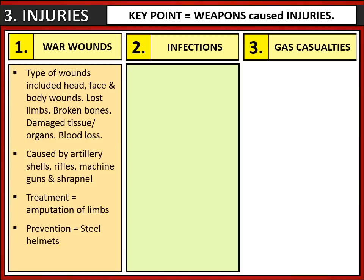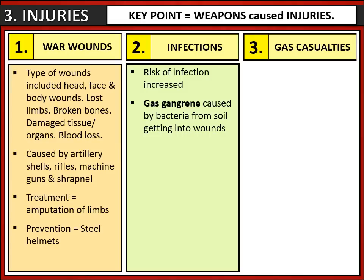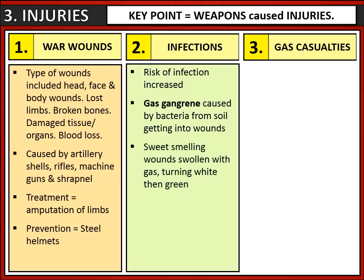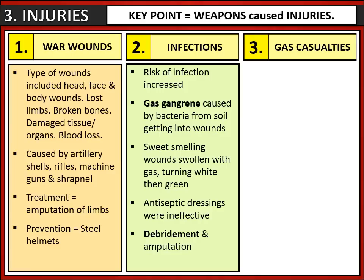Another problem the army faced was infection. The risk of infection increased during the war due to the conditions that many soldiers received their wounds in. Gas gangrene was a particular problem, caused by bacteria in the soil getting into the wound, which could make the wound swell, smell and even turn colour. The army and the medics tried to keep wounds as clean as possible, but due to the conditions they were treating soldiers in, antiseptic dressings were just not effective. Therefore when it came to treatment, they were often dealing with soldiers that already had an infection.